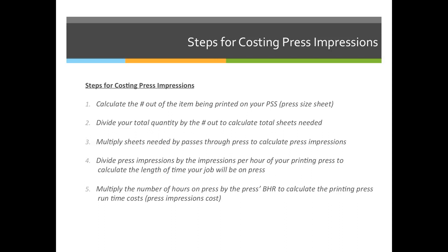Step three is where we start calculating press impressions. You're going to multiply the total number of sheets needed by the number of passes through the press to calculate the total press impressions. So if 10,000 sheets go through the press one time to print the front, it's 10,000 impressions. If it's a two-sided printing job, you'd multiply it times two. The only options you ever have are one pass or two passes — it will never be anything greater than two.